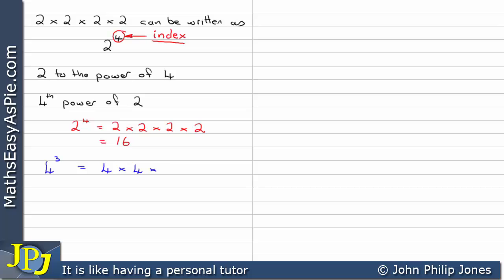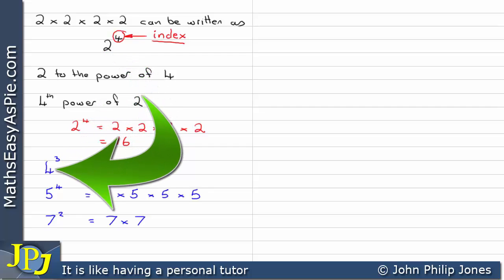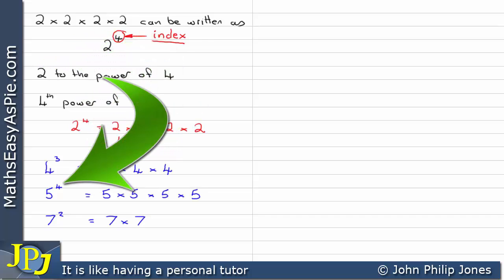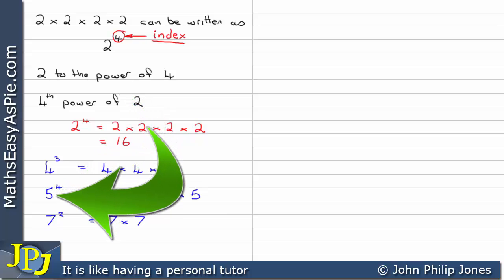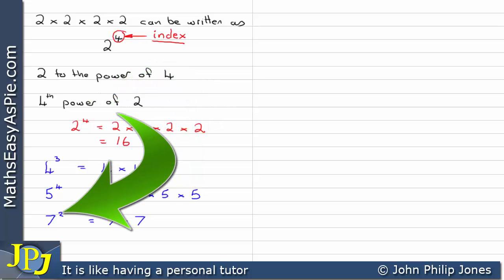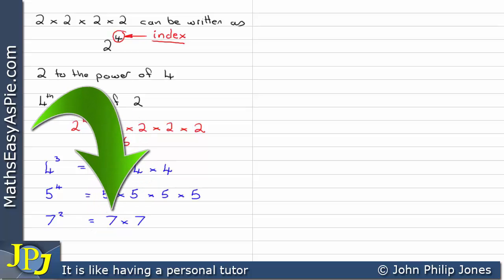So 4 to the 3 is 4 times 4 times 4; 5 to the 4 is 5 times 5 times 5 times 5; 7 to the 2 is 7 times 7. The index 3 next to the 4 tells us we have 3 lots of 4, as you can see here. The index 4 next to the 5 tells us we have 4 lots of 5, and the index 2 next to the 7 tells us we have 2 lots of 7.